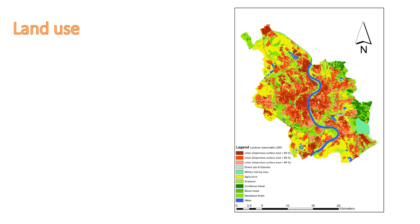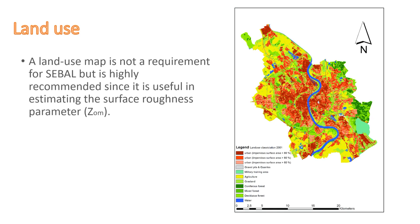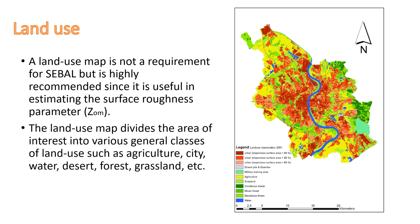A land use map is not a requirement for CYBAL but is highly recommended, since it is useful in estimating the surface roughness parameter. The land use map divides the area of interest into various general classes of land use, such as agriculture, city, water, desert, forest, and grasslands.